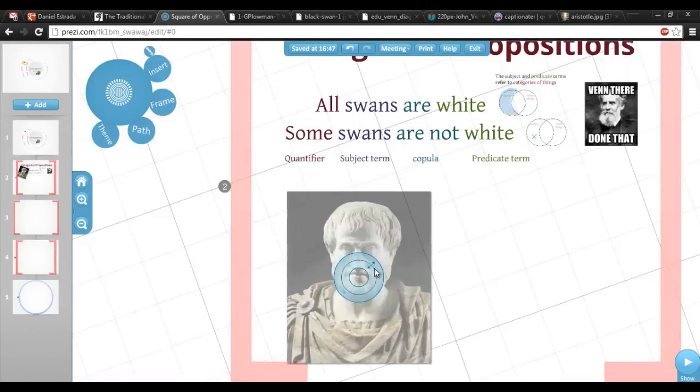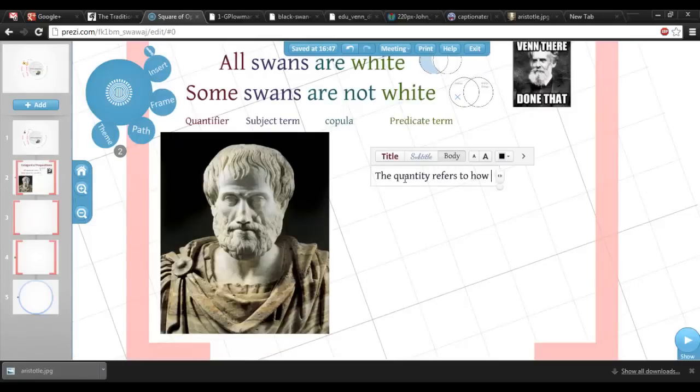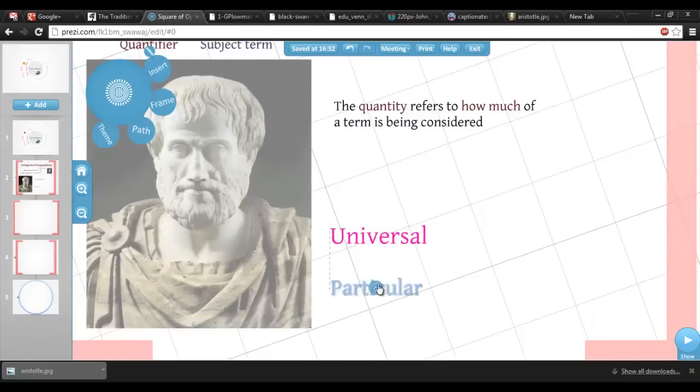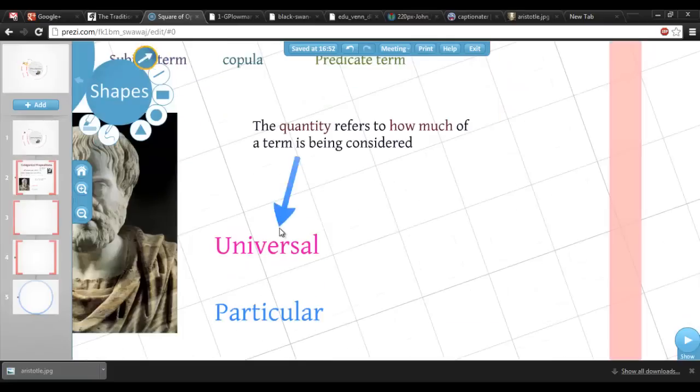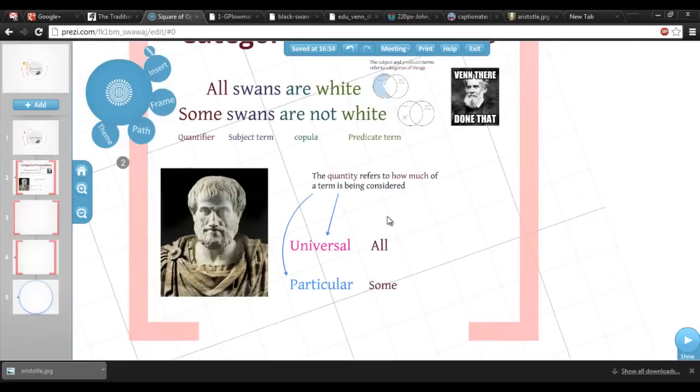Aristotle described every categorical proposition as having two formal attributes. One he called the quantity, which refers to how much of a term is being considered. For Aristotle there were two basic quantities, the universal and the particular. The universal considers the whole of the category, and uses words like all or every, and the particular considers only some of the individuals in a group, and uses the word some. All and some are called quantifiers, because they express the quantity of the proposition.